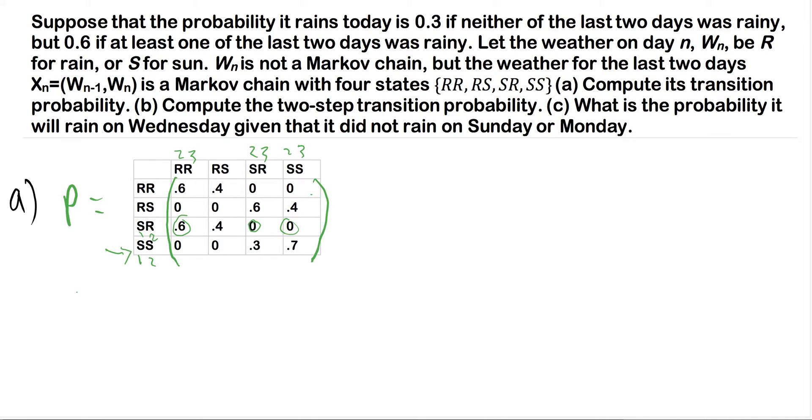So we can also write this out explicitly if my explanation didn't fully convince you. So if we take, for example, XN equals (WN-1, WN), and let's just pick something random here, RS. We know that WN has to be S, which is this right here.